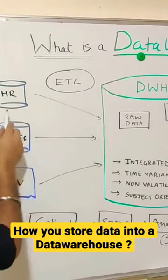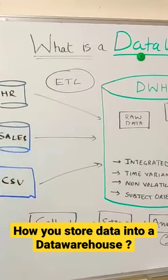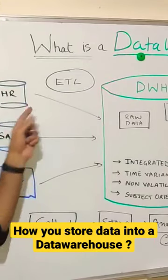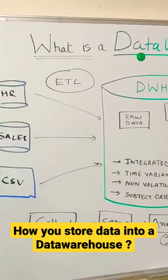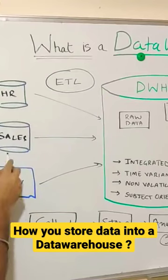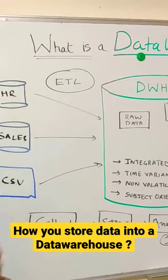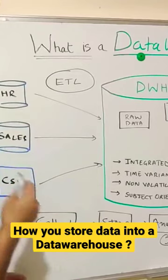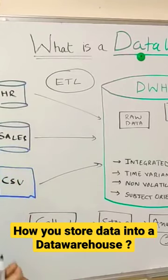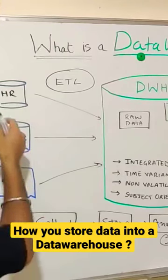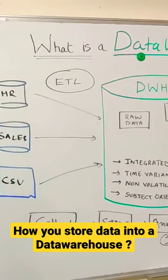What you can do: you already have your HR system where you have all your employees' data, and then you have your sales system — a transactional system — where you have all the sales-related information coming in, including the information of the sales generated by each and every employee.